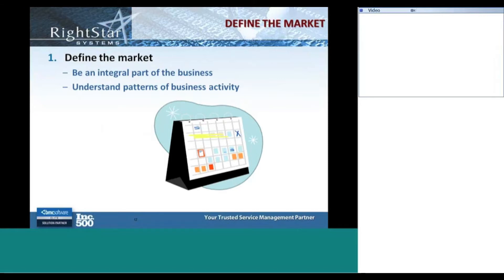There are four basic areas that we look at in service strategy, and the processes I just mentioned fall into these four different areas. The first step in service strategy is to define the market. We want to understand the marketplace, understand patterns of business activity, and we need to be an integral part of the business. The time has passed when it's IT versus the business. We really need to be part of the business and have a seat at the table when decisions are being made. In order to help us do that, we want to understand patterns of business activity.